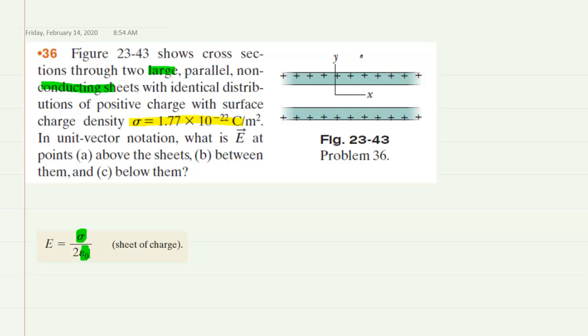To determine the direction of an electric field, we imagine placing a positive test charge at the location of interest. If we place a hypothetical positive test charge above the sheets, the upper sheet, because it's positively charged, would repel that positive test charge upward. That upward vector indicates the direction of the electric field, which we'll call E-U, where U stands for the upper sheet.